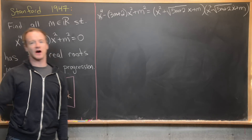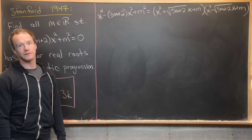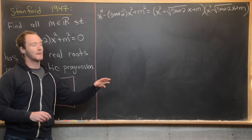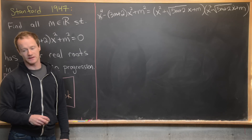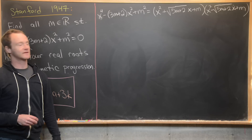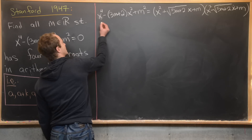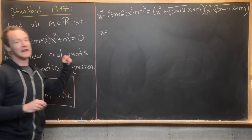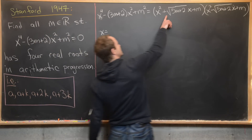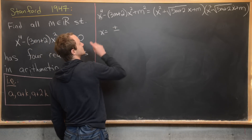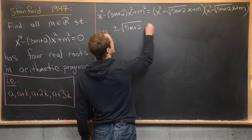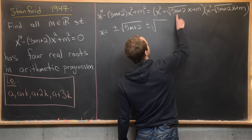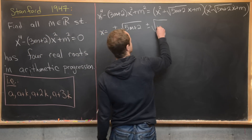Plugging these back in, we factor the quartic as (x² + √(5m+2)·x + m)(x² − √(5m+2)·x + m). Applying the quadratic formula to each factor, and noting the b-values are opposites, the four roots are (±√(5m+2) ± √(m+2)) / 2, since the discriminant of each factor is (5m+2) − 4m = m + 2.